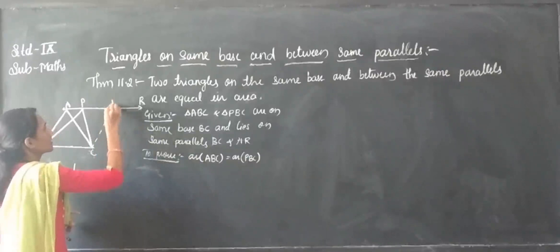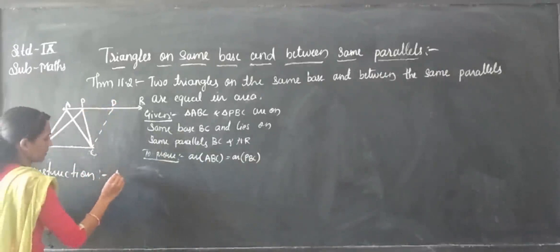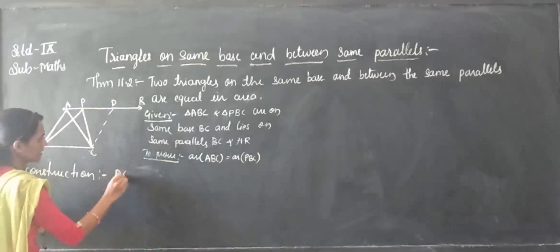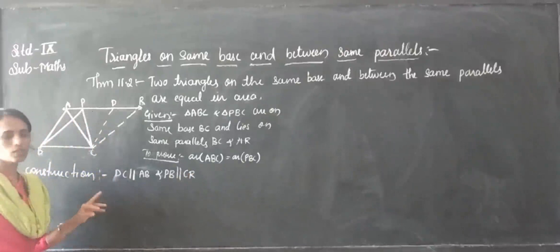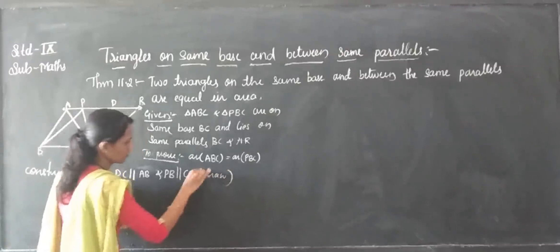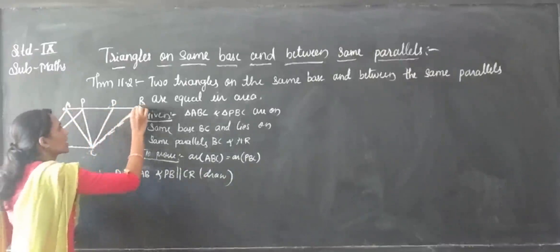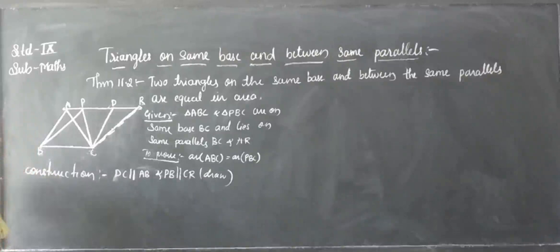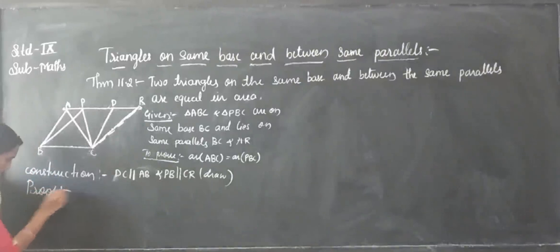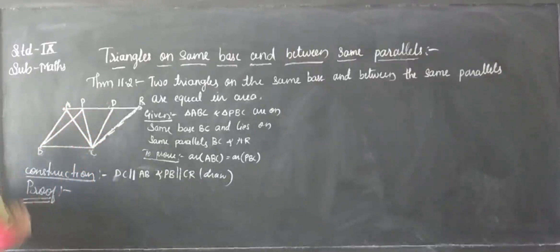Draw a line parallel to AC. So, we draw: CD parallel to AB, and CR parallel to BC — that gives us parallelogram ABCD and parallelogram PBCR. So now we have two parallelograms: ABCD parallel to one, and PBCR, a second parallelogram.